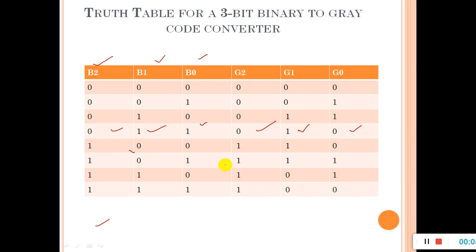The code converter is a combinational circuit, so we will take six steps to design it. First, understand how to convert three-bit binary to gray. Second, identify the inputs and outputs — we have identified B0, B1, B2 as inputs and G0, G1, G2 as outputs. Third, give names to the inputs and outputs, which we have already mentioned.